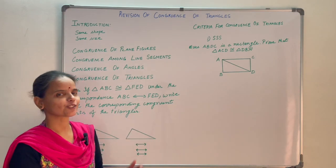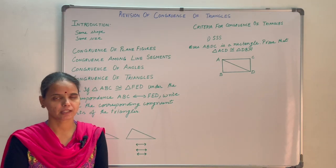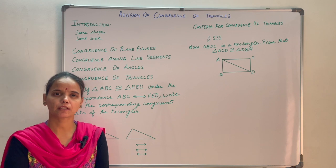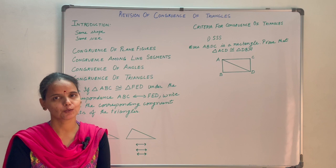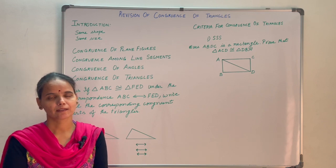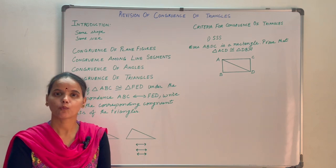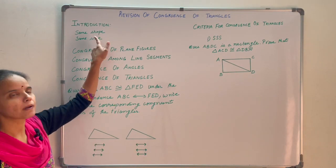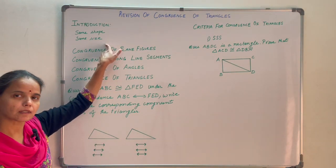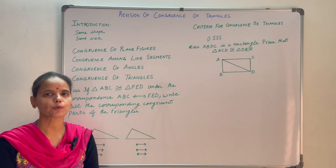Revision of congruence of triangles. You must have seen biscuits of the same brand look alike, erasers of the same brand look alike, pens of the same brand look alike. Why? Because they all have the same shape and same size. Such objects are congruent.